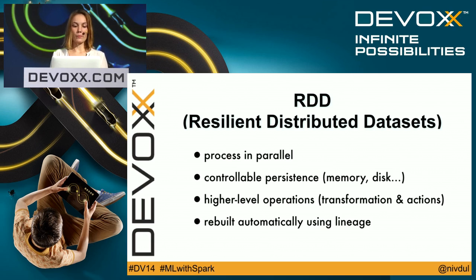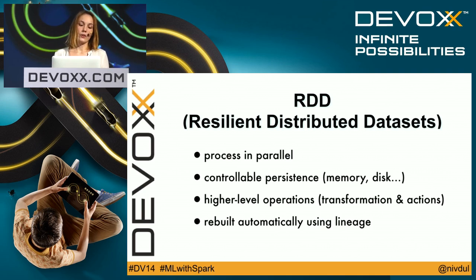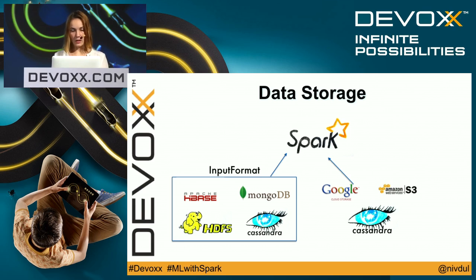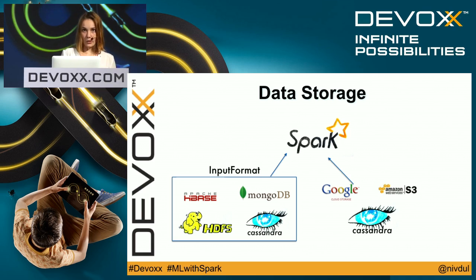If you use a transformation and want to run your computation, you need to call an action. The last point is fault tolerance: if you lose a partition of an RDD, it will be rebuilt automatically using lineage. You can push data into Spark using text files, sequence files, any Hadoop input format like HDFS, Cassandra, or MongoDB — and also Google Cloud Storage or Amazon S3. Cassandra even developed their own RDD.